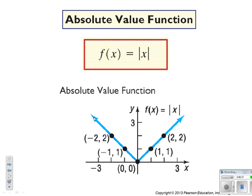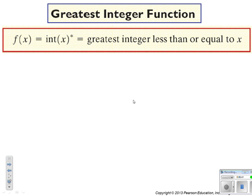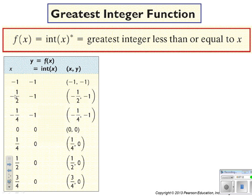The greatest integer function is a new one. It takes whatever value you input and finds the greatest integer less than or equal to it. So if you put in 2.5, it spits out 2 — it keeps you on the integers. For example: put in −1/2, it bumps down to −1; put in 1/4, it goes down to 0; put in 3/4, still down to 0. It keeps you at the same integer until you reach the next whole number.